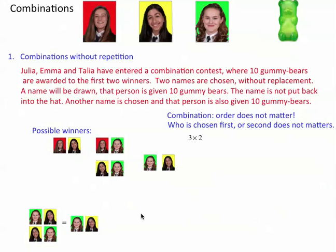So we're going to say: how many ways can you arrange these people? In the first place you have three choices, in the second place you have two choices — so three times two. Except the order doesn't matter to us, so we want to reduce this by dividing by two. You end up getting three. So here are your three outcomes.